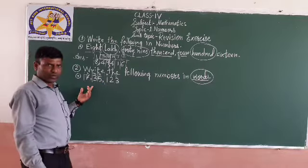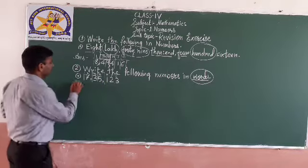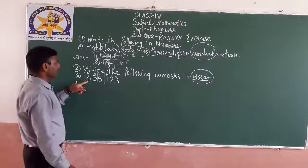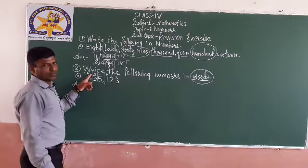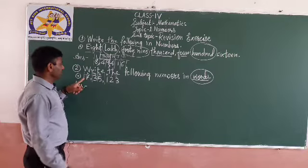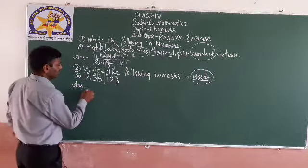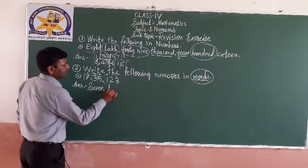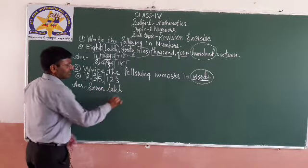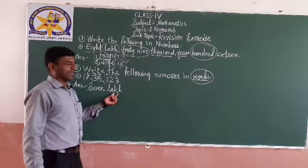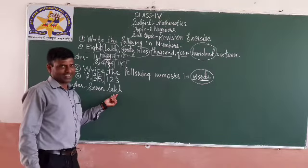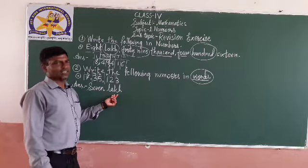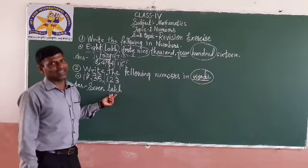Now how to write? Very simple. 7 is in the lakhs place — 100,000. So 7 lakh. Start writing seven lakh. See the spelling of lakh: L-A-K-H. Not L-A-C-K. Some students last year wrote lakh as L-A-C-K.